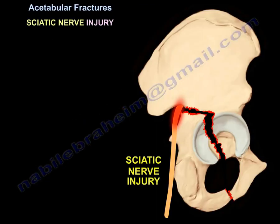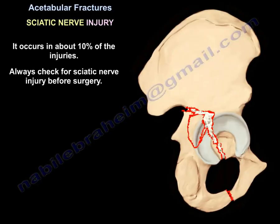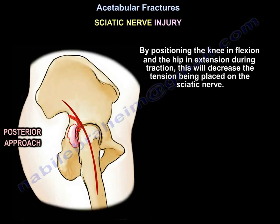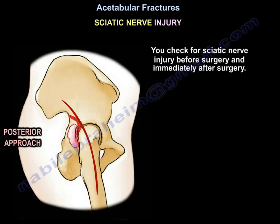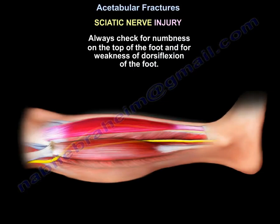Sciatic nerve injury occurs in about 10% of acetabular injuries. Always check before surgery. During the posterior approach, protect the sciatic nerve by positioning the knee in flexion and the hip in extension during traction — this decreases tension on the sciatic nerve. Check for sciatic nerve injury before and immediately after surgery. Always check for numbness at the top of the foot and weakness of dorsiflexion.